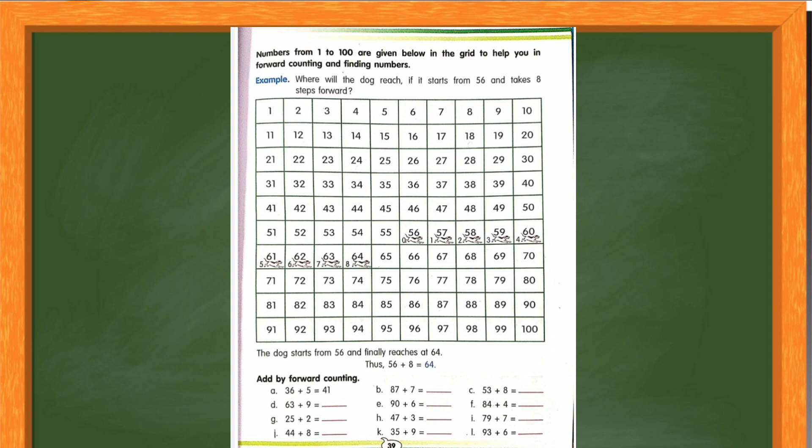Now let us move to page number 39. There also, see you have add by forward counting. Here you have questions starting from A to L. So before you start doing this, see you have a number grid from 1 to 100 in the same page. So look into the page and add by forward counting. You have to start doing the sums. So I hope my dear kids you can do this very easily with the help of number grid.